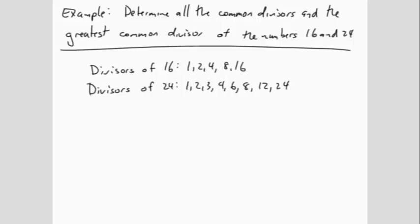The common divisors are the numbers that appear in both lists. In this case, the common divisors are 1, 2, 4, and 8. The greatest common divisor is the largest of the numbers in this list, so the greatest common divisor is 8.